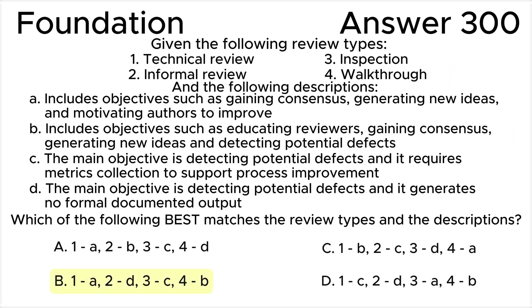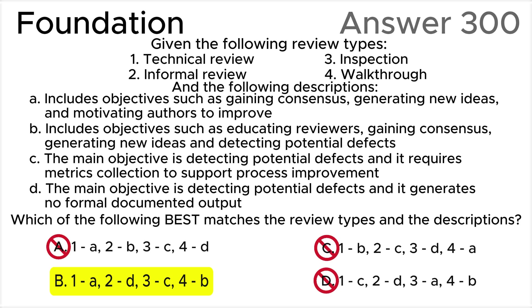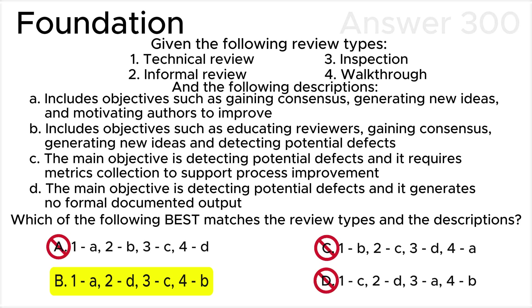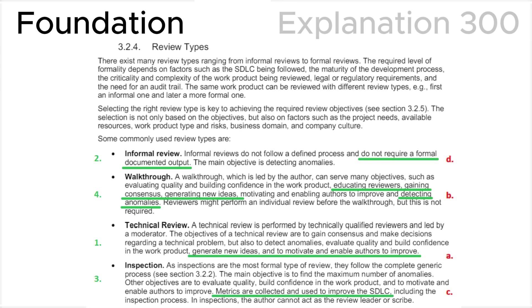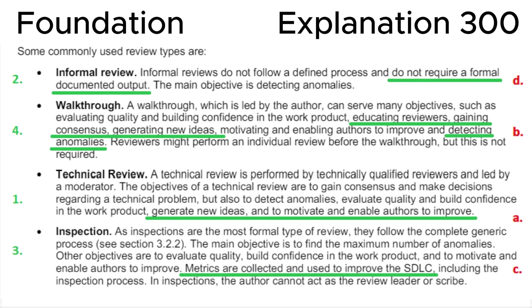In summary, all of the above leads us to the correct answer B: one is A, two is D, three is C, four is B. Please remember all the review types and their descriptions to pass the ISTQB exam. Let's also look at section 3.2.4 review types in the ISTQB syllabus, where we can see that informal review does not require formal documented output.